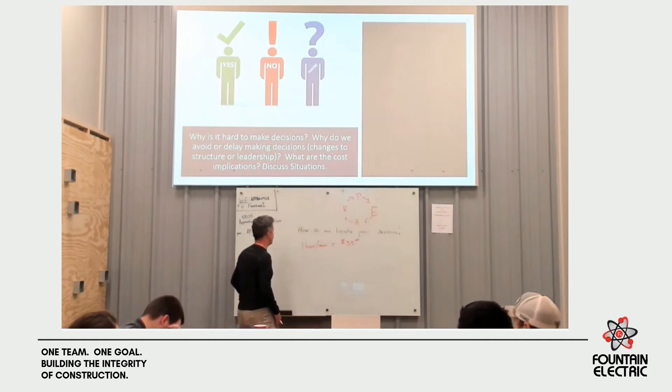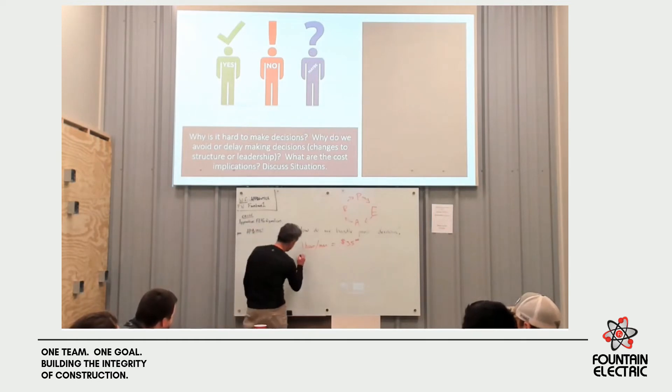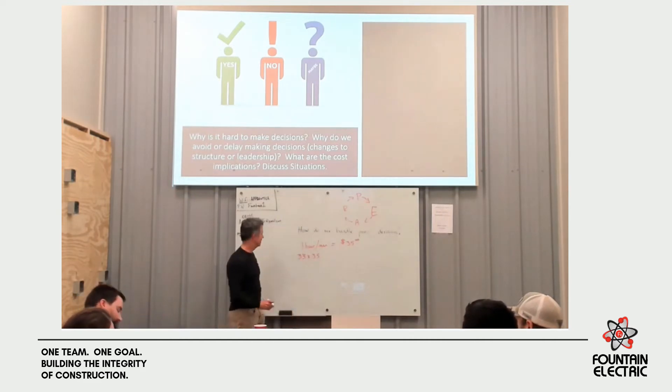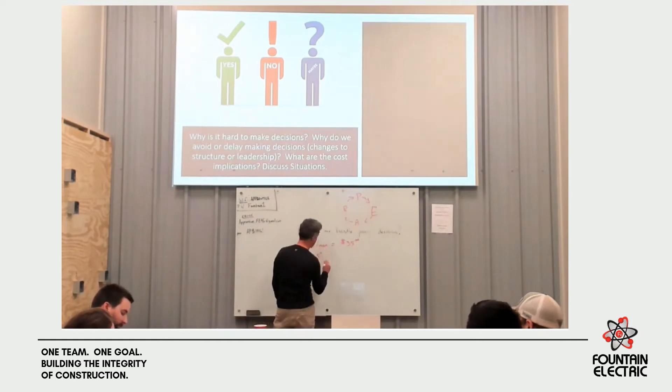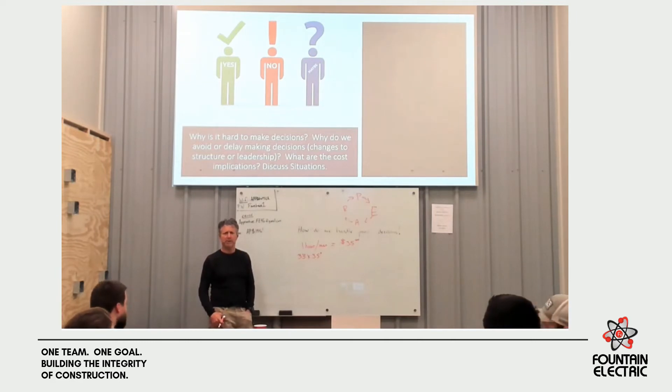It's $35 today. That's a good average for us. So if we set that and we've got 33 people times 35, who's got their calculator out? Did anybody anticipate we were going to do math?